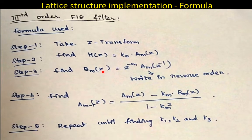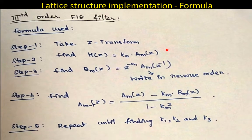In each iteration, you calculate in reverse manner: k3, k2, and k1 are obtained step by step. The formulas for each step must be kept in mind in order to solve the problem.